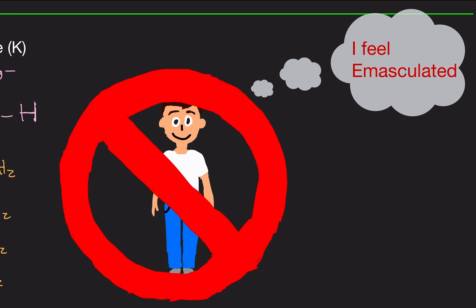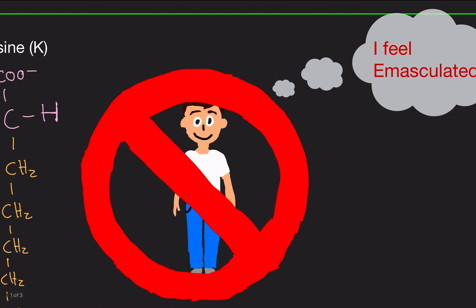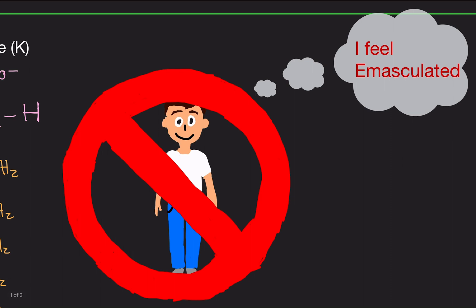So you're probably wondering why I drew this. We're going to call this guy Timmy. Timmy is feeling emasculated because he thought his body makes all 20 essential amino acids. Well, Timmy just learned his body cannot make lysine.